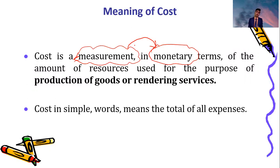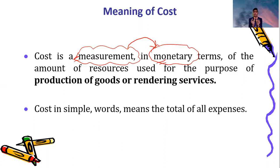Cost is the amount of resources used for the purpose of production of goods and services. So the cost of a product is the amount of resources — the material used to produce that particular item, such as a pen.